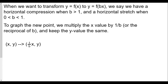We want to transform y equals f of x to y equals f of b times x. We say we have a horizontal compression when b is greater than one, and a horizontal stretch when b is between zero and one. To graph the new point, we multiply x by one over b, or the reciprocal of b, and keep the y value the same.